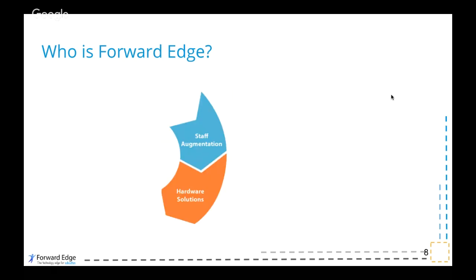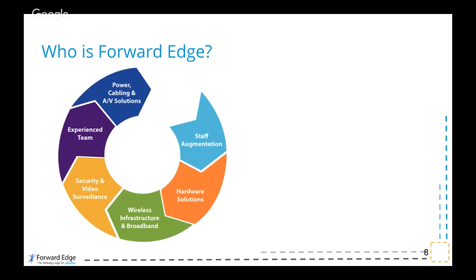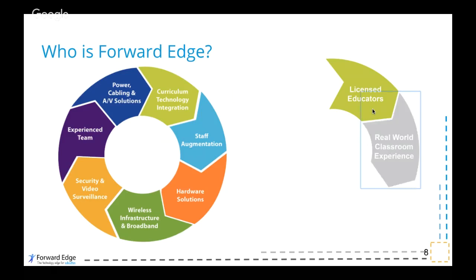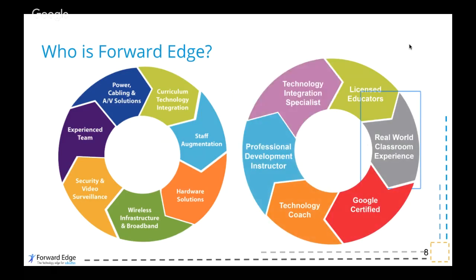A little bit about Forward Edge — we are a K-12 technology company, meaning we do all things technology for schools, including selling hardware, setting up and managing wireless networks, and we even have our own cabling team that pulls and hangs cables, hangs APs, and moves projectors around. So we really can do everything from a technology need that a school may have.